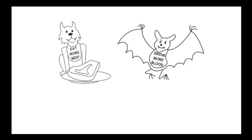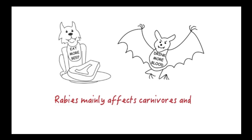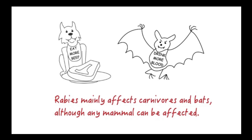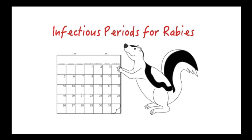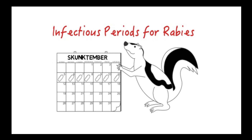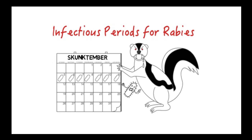Rabies maintained by dog-to-dog transmission is termed canine rabies, and rabies in a dog originating from another mammal such as a skunk would be referred to as skunk rabies in a dog. Usually saliva is infectious at the time clinical signs occur, but domestic dogs, cats, and ferrets may shed virus for several days before onset of clinical signs. Skunks have been reported to shed virus up to eight days before onset of signs.